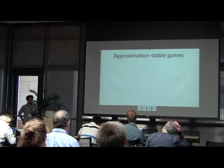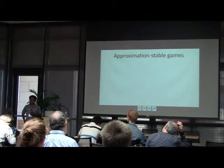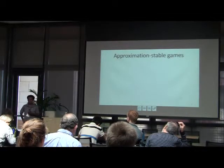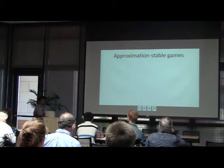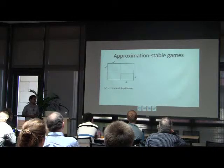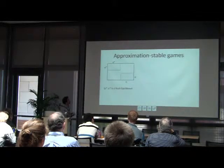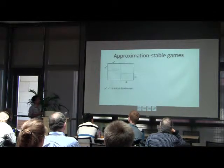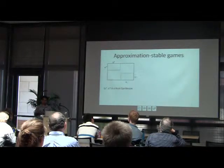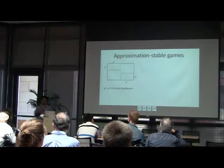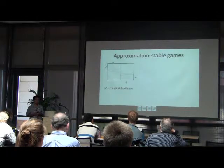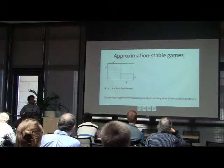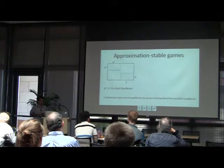Let me start with the motivation. One reason why you might want to compute a Nash equilibrium or an approximate Nash equilibrium is to predict how people are going to behave in a certain situation. If that is your motivation, then your game matrix better not look like this: in a particular game, P-star Q-star is a Nash equilibrium and PQ is an approximate Nash equilibrium with a totally disjoint support from P-star Q-star. In such a game, computing an approximate Nash equilibrium is not really useful because it won't help you predict behavior. This motivates a definition of stable games — precisely games where such a thing does not happen.